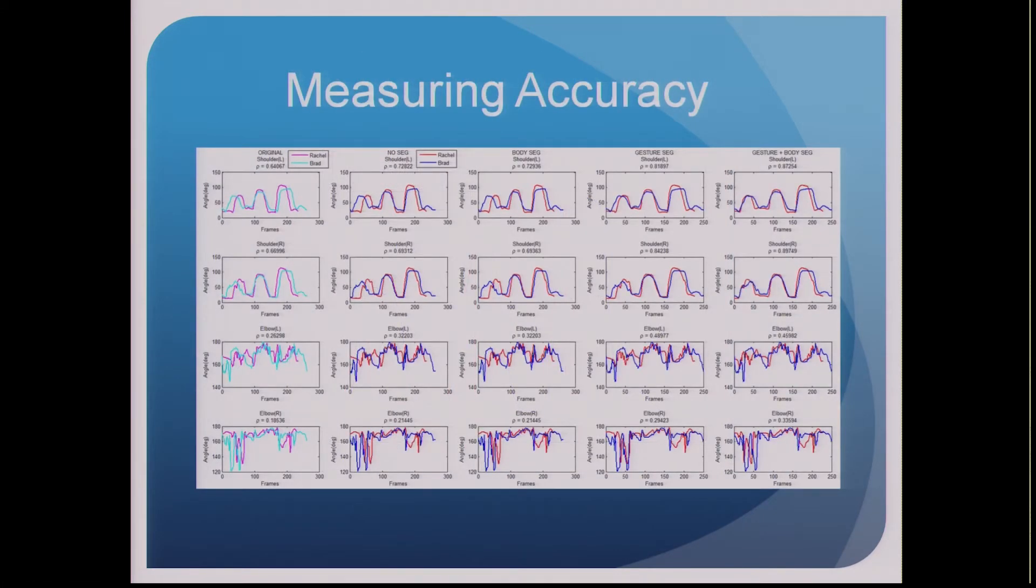So now we can finally get to the good stuff, the fruit of the labors, my results. So every single column, with the exception of the first, which represents the original sequence, is the result of a different time estimation method, and every row corresponds to a different joint angle. So we have the left and right shoulders and the left and right elbows.